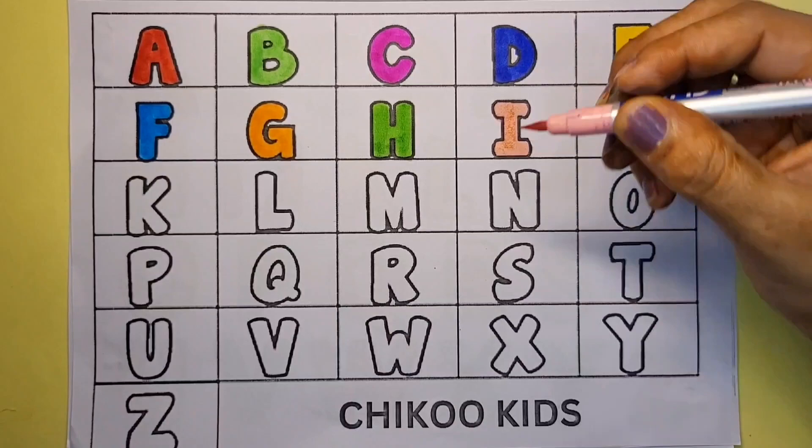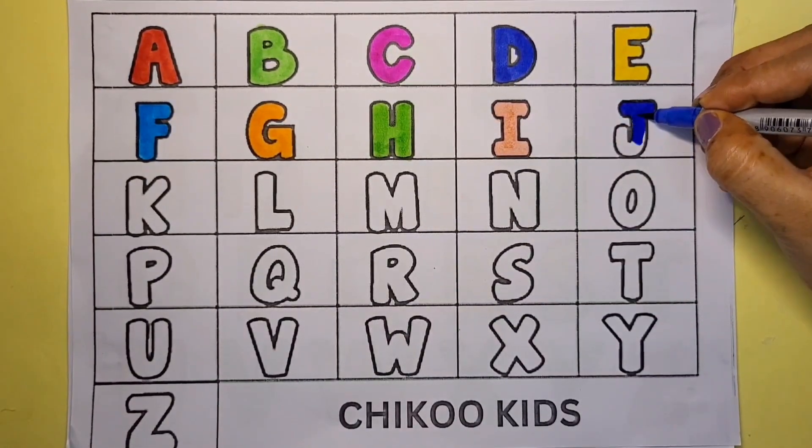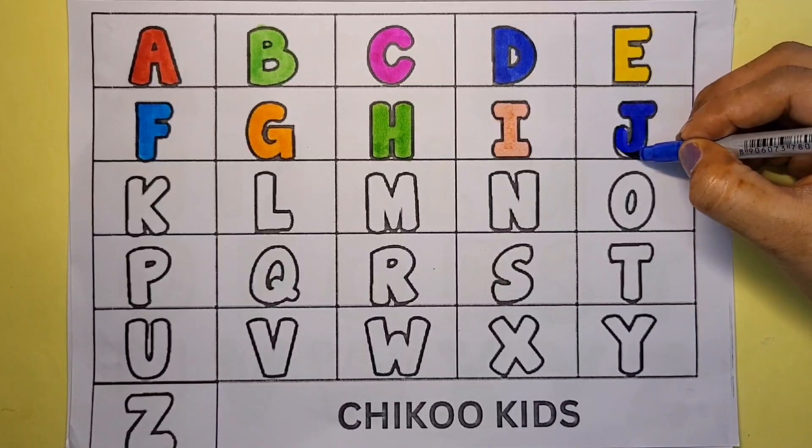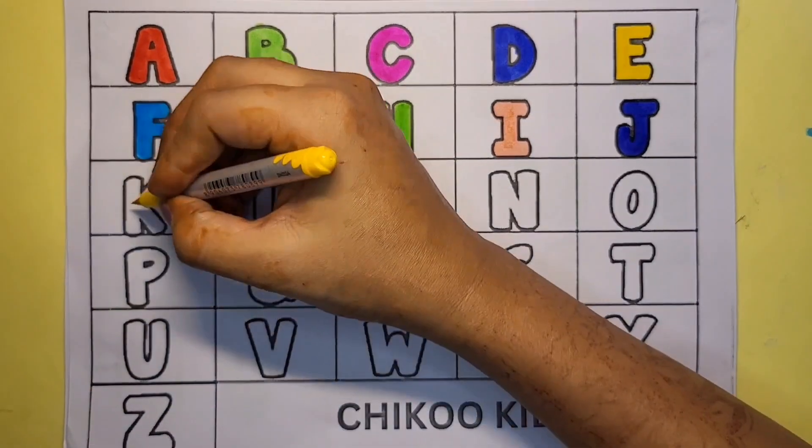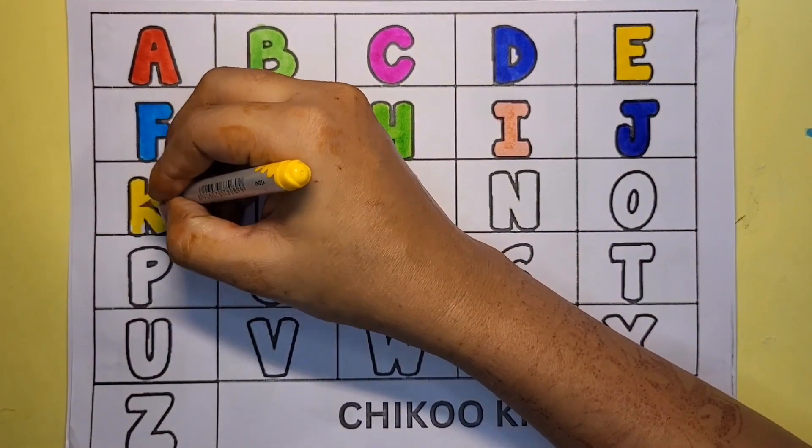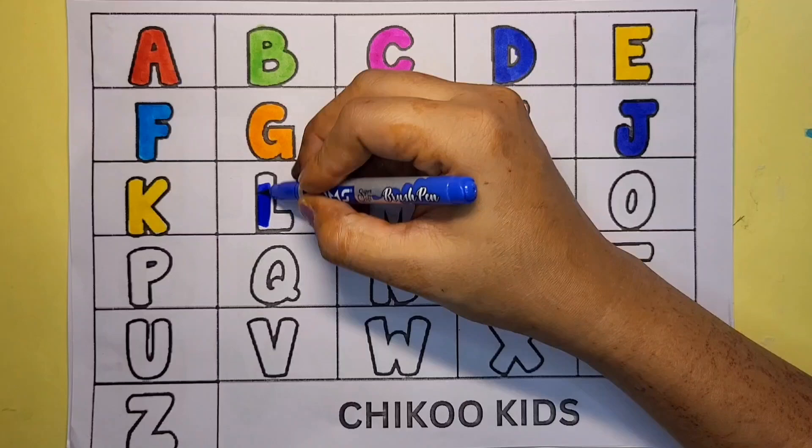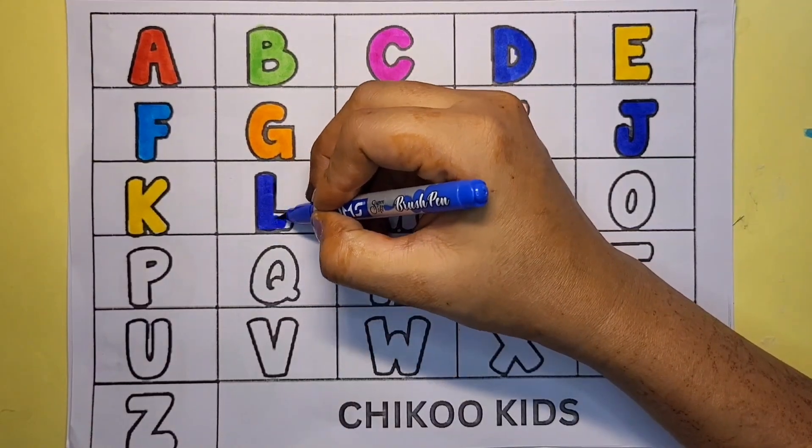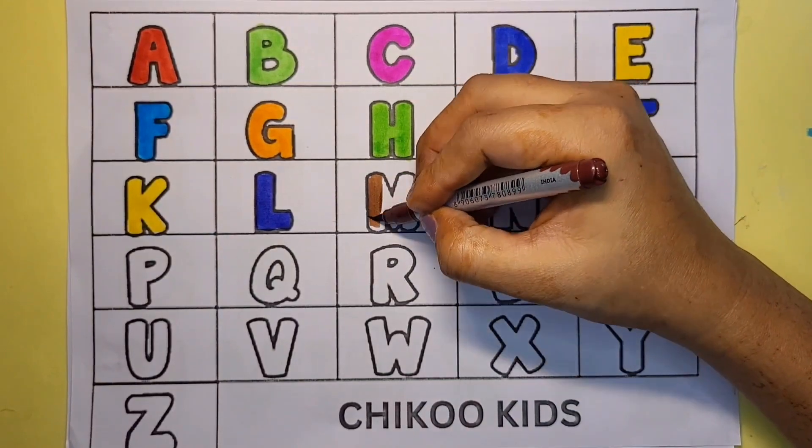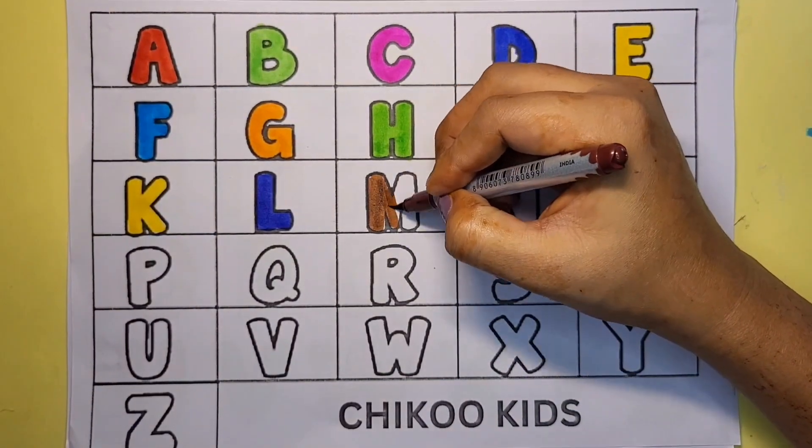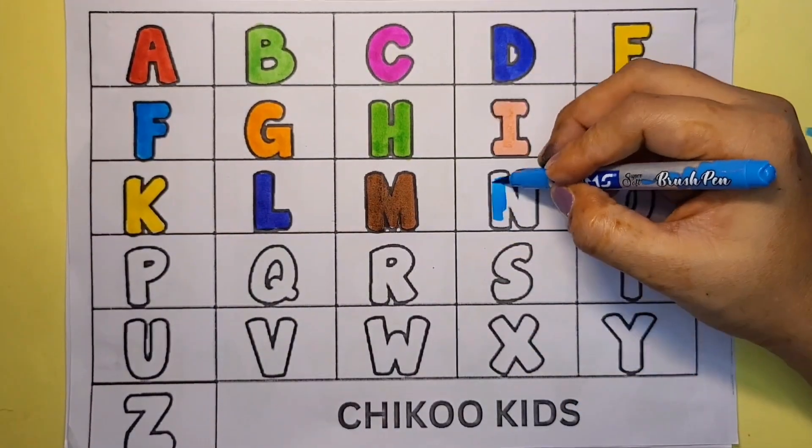Blue color J. J for joker. Yellow color K. K for kite. Blue color L. L for lion. Brown color M. M for monkey.